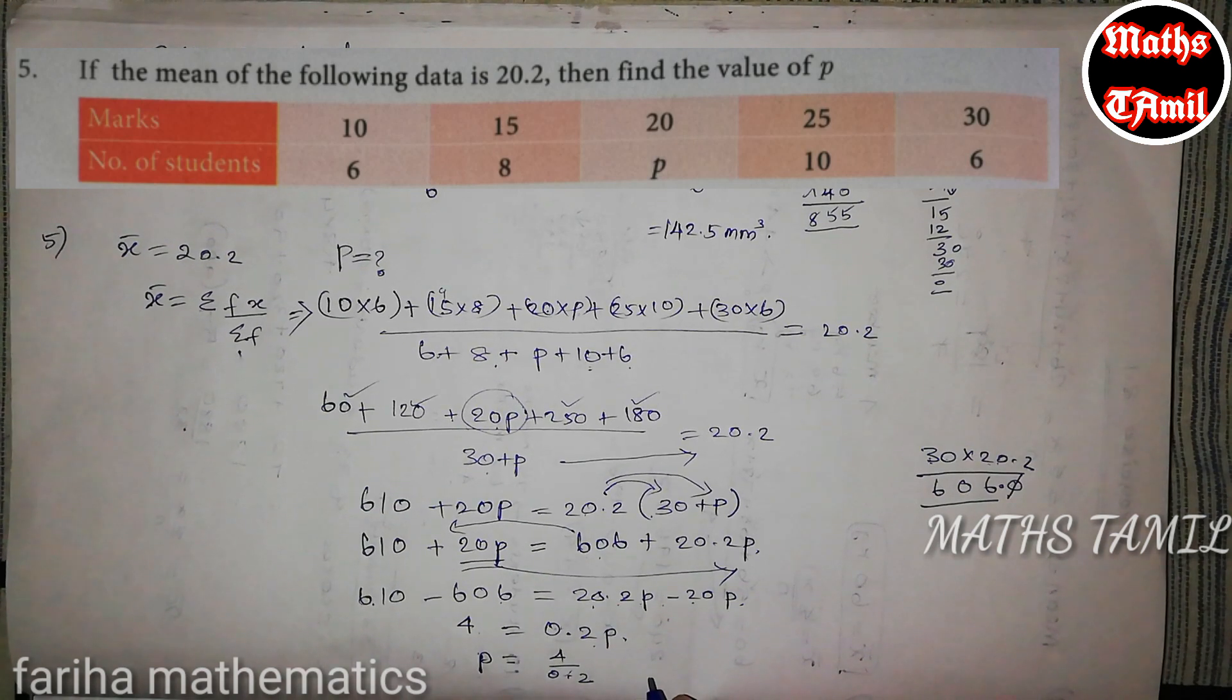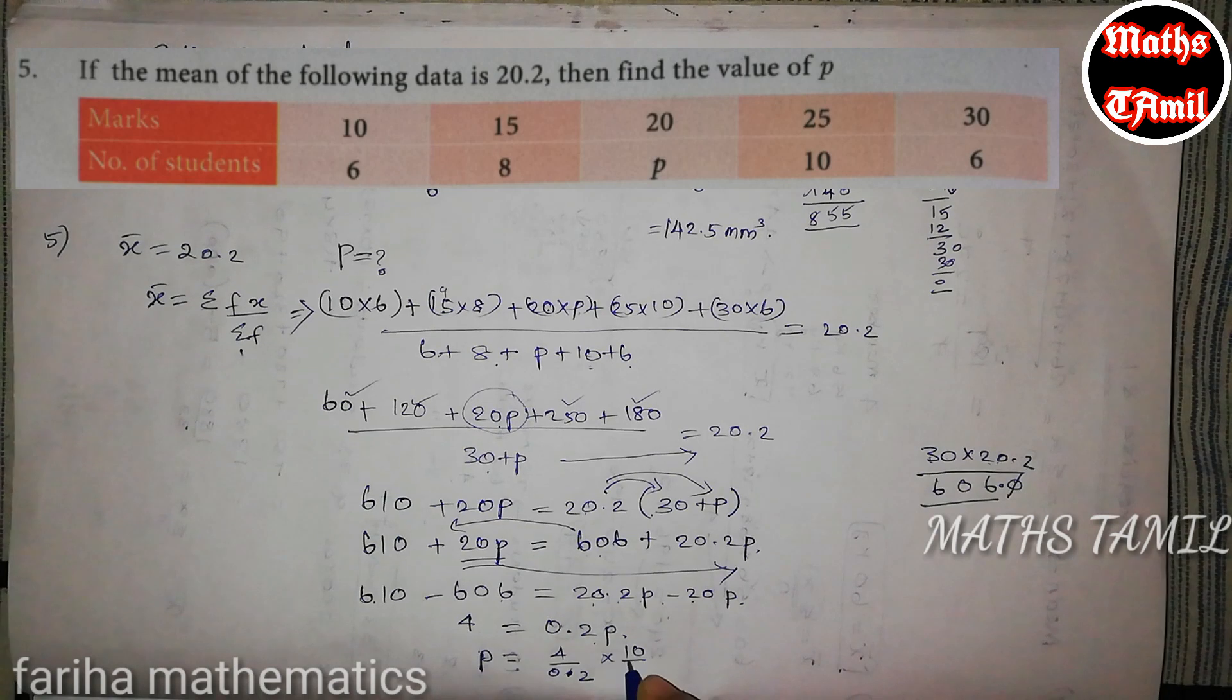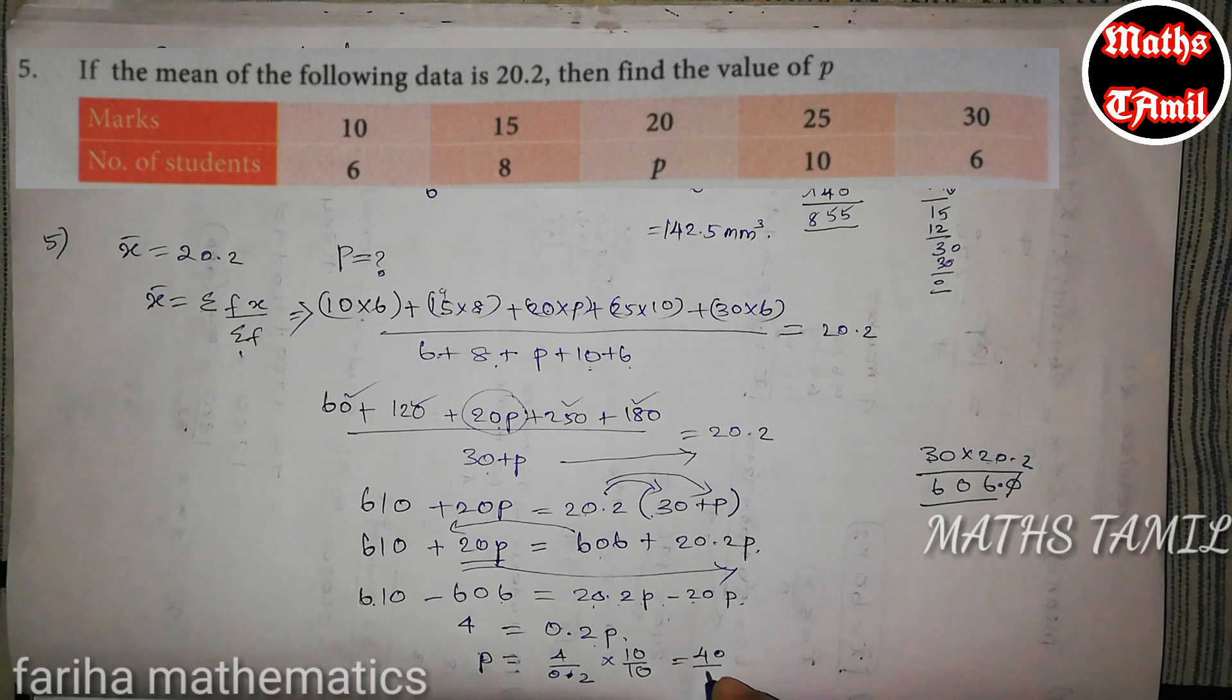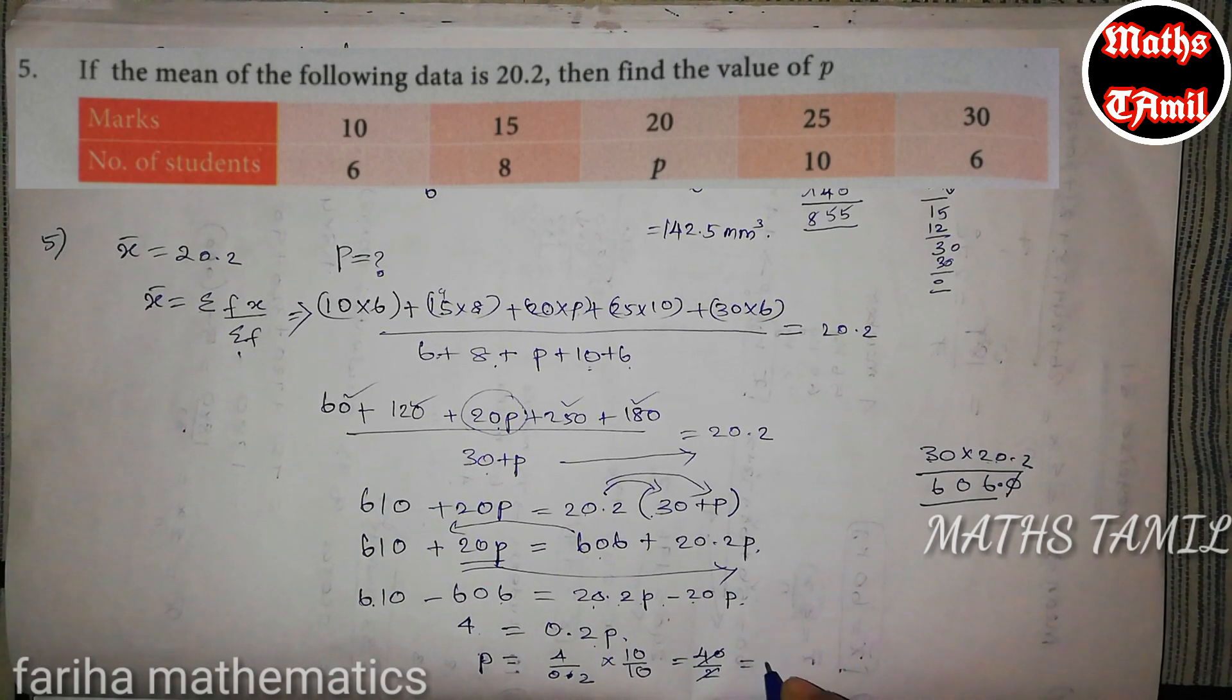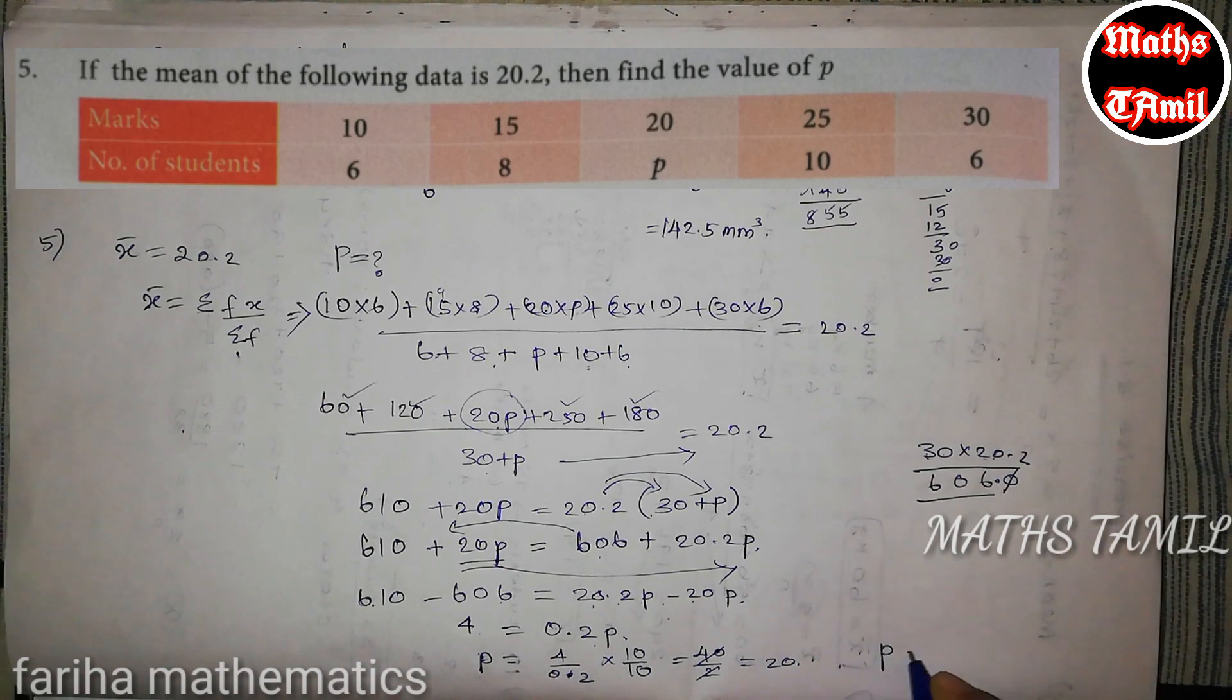So if you want to use 0.2, if you want to use 0.2P. So P value is 20.